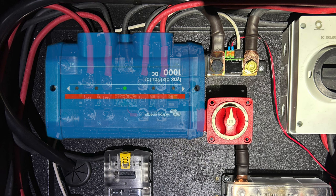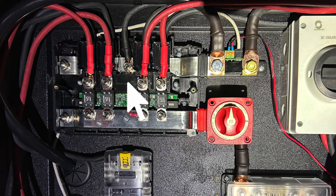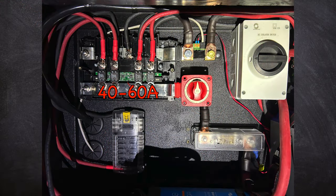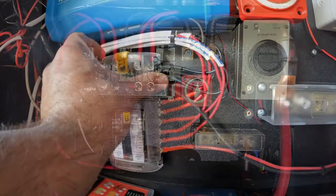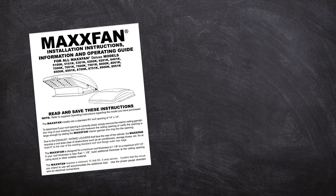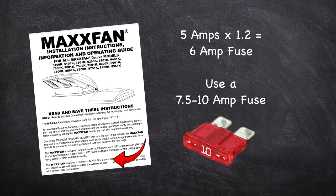In my system, for example, this happens at the Lynx distributor and again at the DC fuse panel. In my van, I used 200-amp fuses at the battery, 40 to 60-amp fuses inside the Lynx distributor, and 10 to 25-amp fuses in the DC fuse panel. Each fuse size was determined either according to the device manufacturer's recommendations, or by multiplying the device's continuous amperage by 1.2 and rounding to the nearest available fuse size. However, when rounding up, do not exceed 150% of the rated wire ampacity.